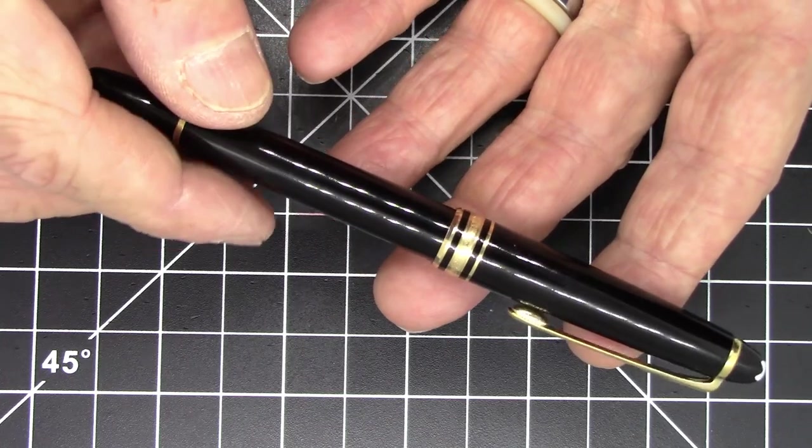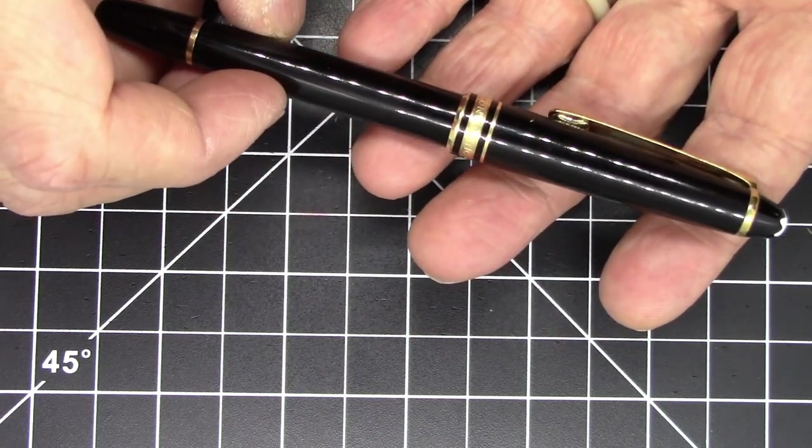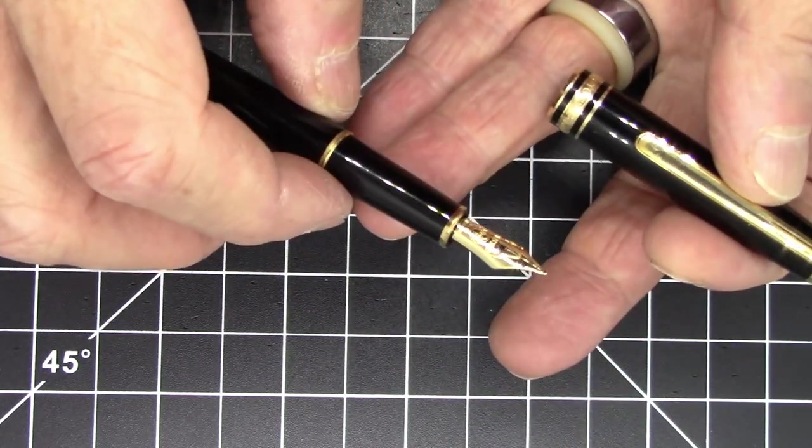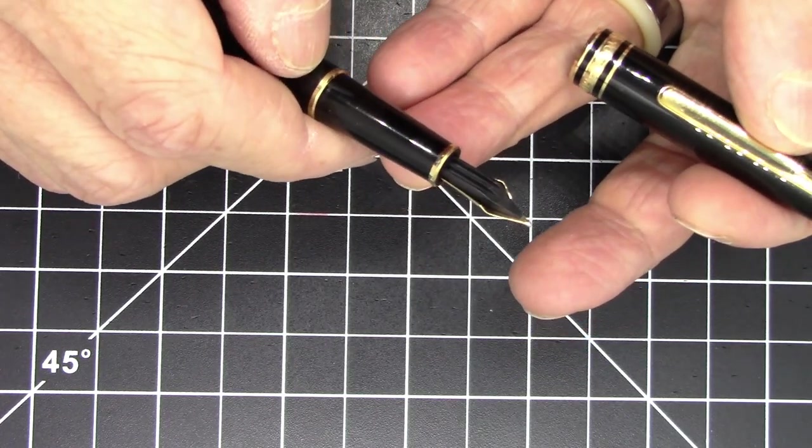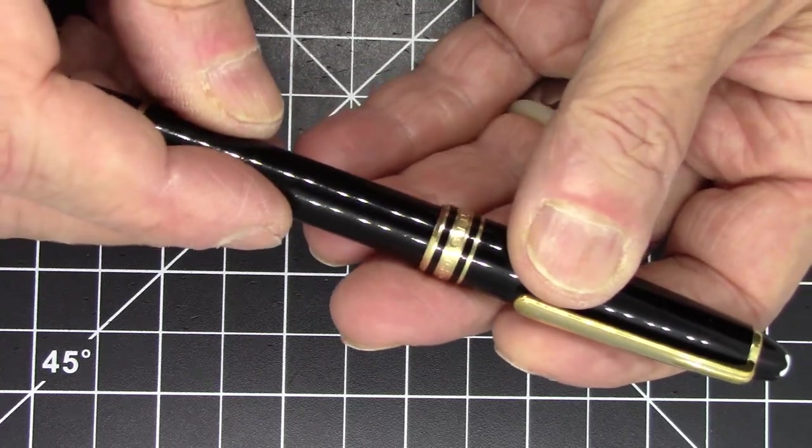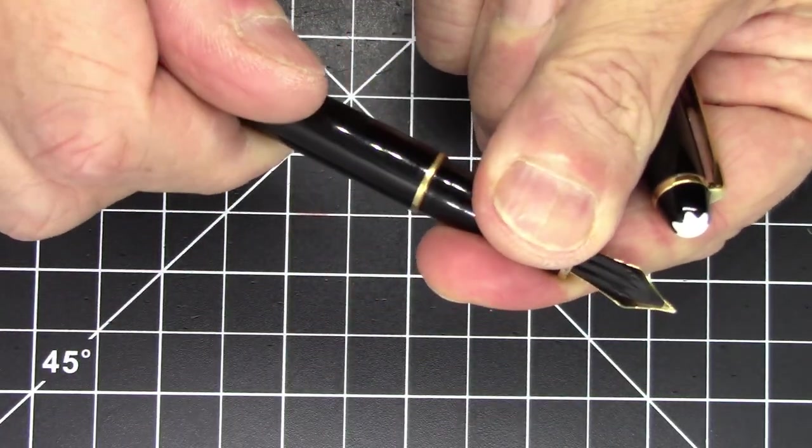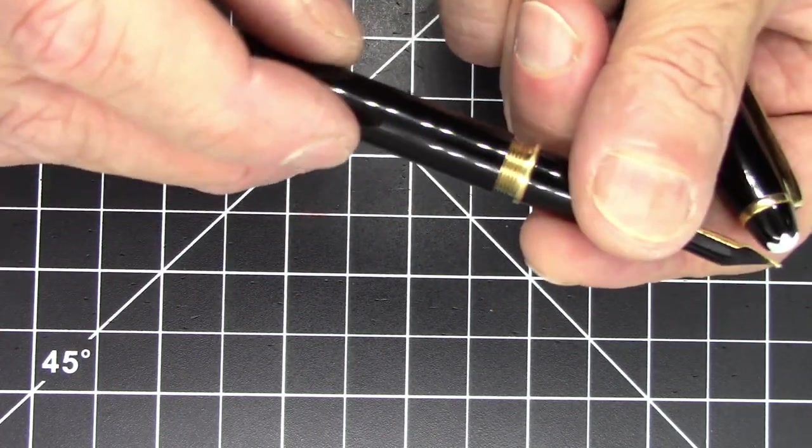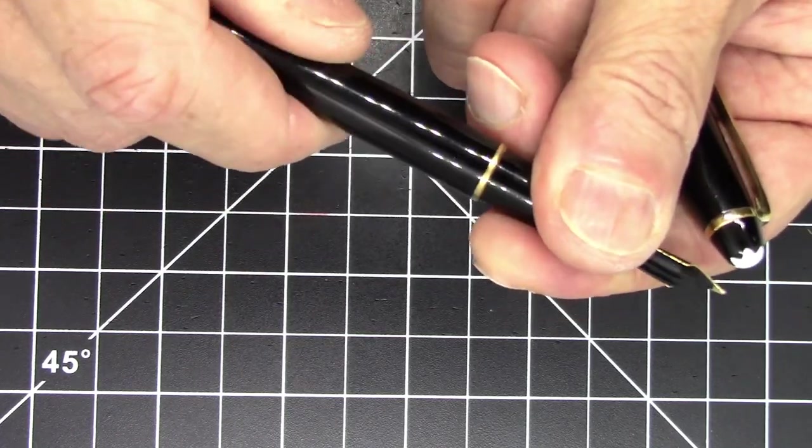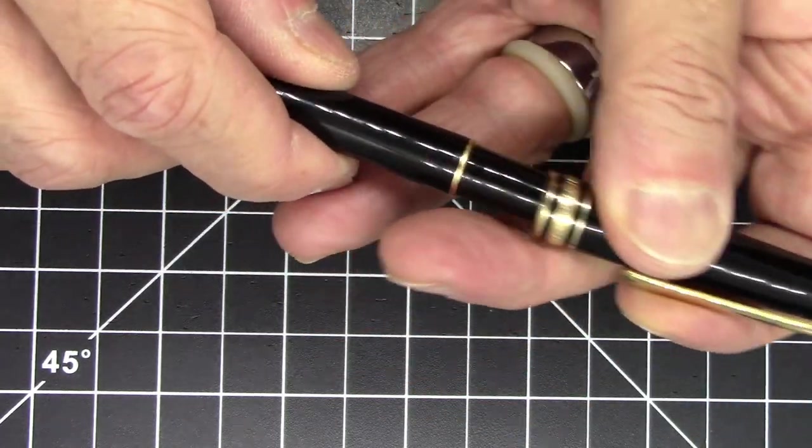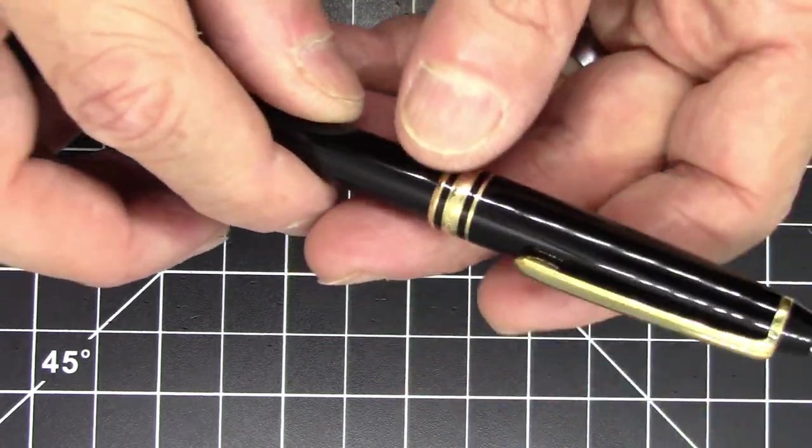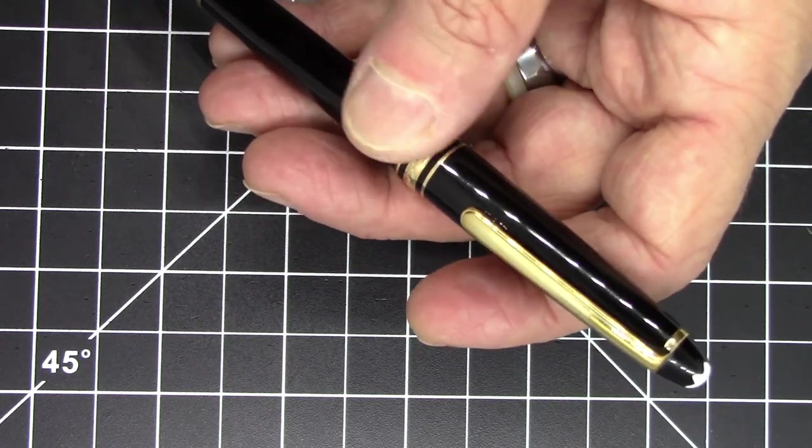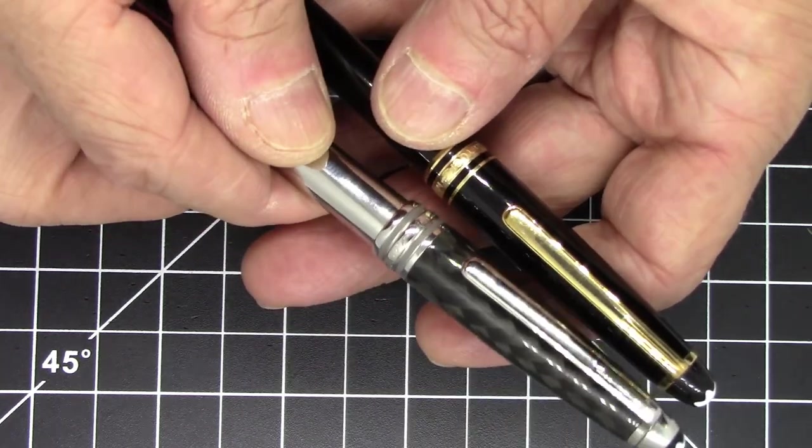So this one is a Montblanc 144. This was given to me as a gift in the early 1990s. It has a really nice 14 carat yellow gold monotone nib, a smallish nib, but it's a pretty small pen. It's a cartridge converter pen with Montblanc. This has a Montblanc converter, but Montblanc converters are standard international. So that is pretty nice. Montblanc cartridges are standard international. Now this is a pull to uncap pen.